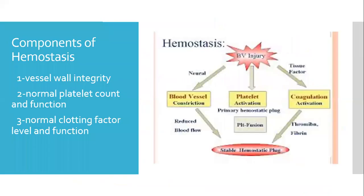As a reminder, the components of hemostasis include normal vessel wall integrity, normal platelet count and function, and normal clotting factor level and function. Any one of these, when deranged, will produce a bleeding tendency.